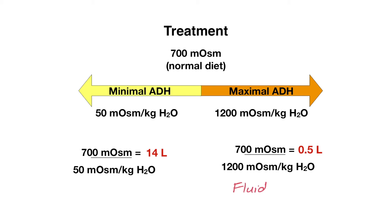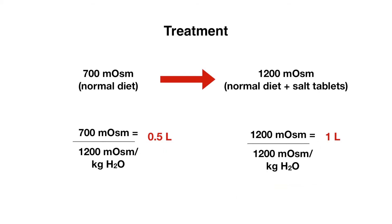One way we can treat this is to limit the patient's fluid intake to match the amount of fluid that they can actually put out in their urine. This is often the first-line treatment option for most patients with SIADH who are asymptomatic or have very mild hyponatremia. Another way is to increase the solute load by giving salt tablets — increasing the milliosmoles from 700 to 1200 means the patient can increase their urine output from half a liter to a liter and get more water off. Salt tablets are often added as a second-line treatment after fluid restriction if fluid restriction does not work that well.